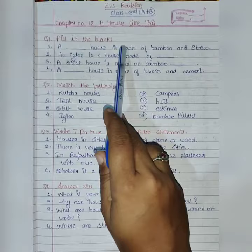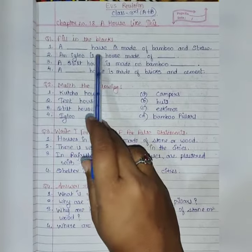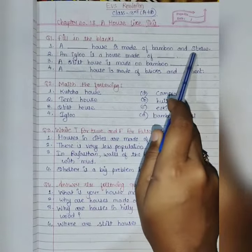Question number one, fill in the blanks. First, a house is made up of bamboo and straw. You have to fill the proper word in that blank.